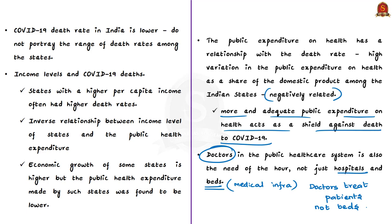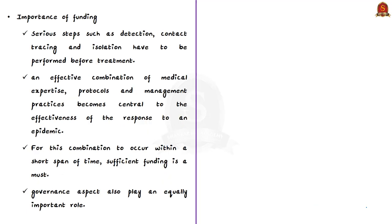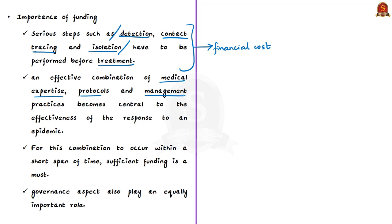Thirdly, the authors talk about the importance of funding to handle an epidemic or pandemic. During a pandemic, serious steps such as detection, contact tracing and isolation have to be performed before treatment is started. This process along with treatment will cost a lot of money. An effective combination of medical expertise, protocols and management practices becomes central to the effectiveness of the response to a particular epidemic. For this combination to occur within a short span of time, sufficient funding is a must.